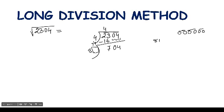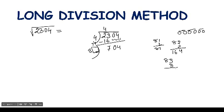We try different unit digits for the divisor. Trying one: eighty-one times one equals eighty-one. Trying two: eighty-two times two equals one hundred sixty-four. Trying three: eighty-three times three equals two hundred forty-nine. Trying four: eighty-four times four equals three hundred thirty-six. We continue until the product matches the dividend.